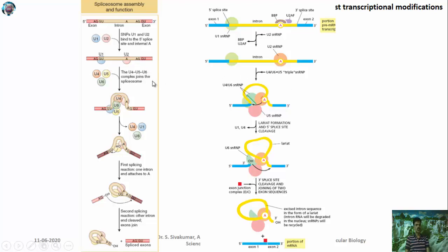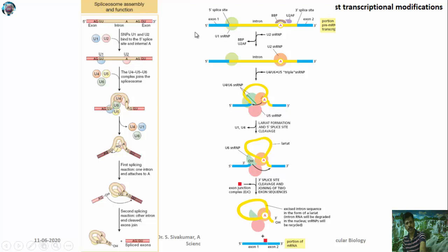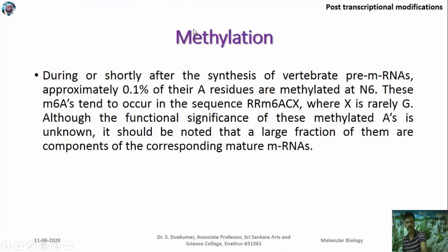The snRNPs U1, U2, U4, U5, and U6 are all involved in the splicing reaction of mRNA. This type of splicing is known as spliceosomal splicing.